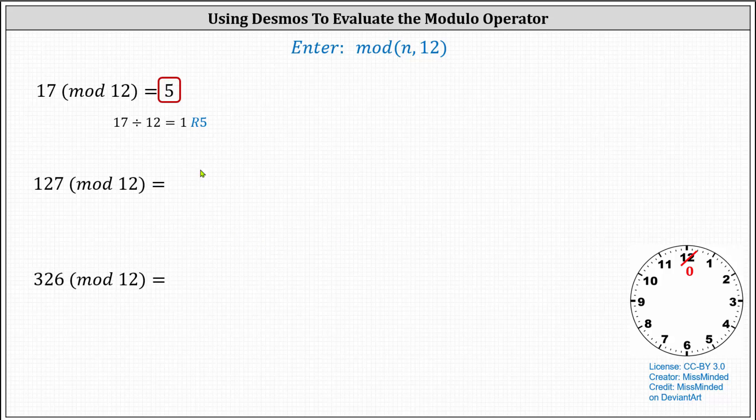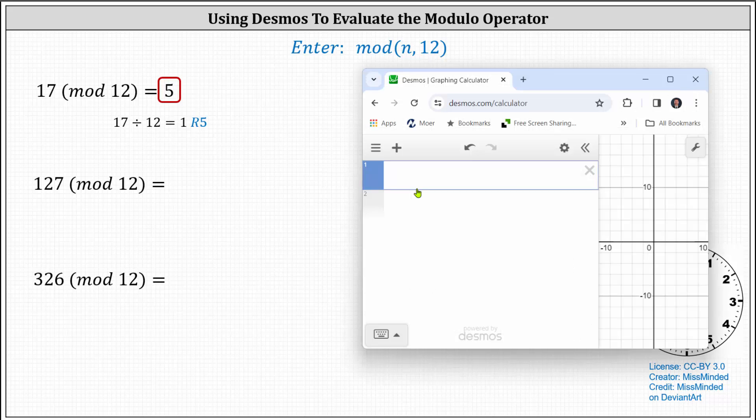But again, we can check this using Desmos by simply entering mod and then in parentheses, the number comma 12. Again, mod and then in parentheses, 17 comma 12, which gives us five. We can also say that 17 is congruent to five mod 12.